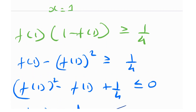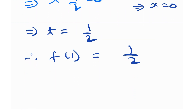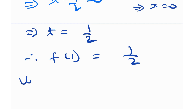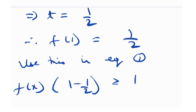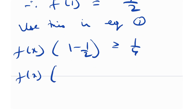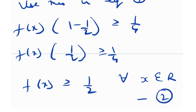I'll label f(x)·(1 − f(1)) ≥ 1/4 as Equation 1. Using f(1) = 1/2 in Equation 1, I get f(x)·(1 − 1/2) ≥ 1/4, which means f(x)·(1/2) ≥ 1/4. Therefore f(x) ≥ 1/2 for all x in the real numbers. I'll label this as Equation 2.